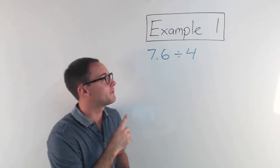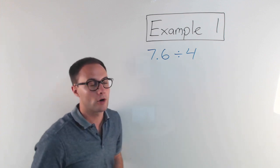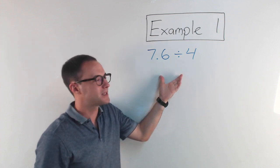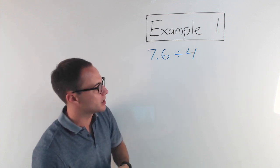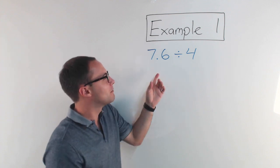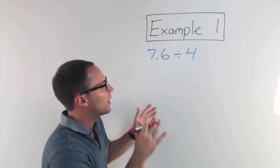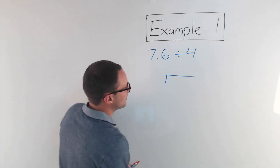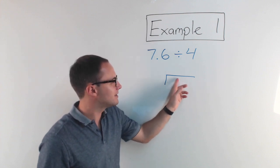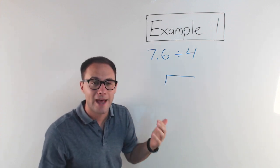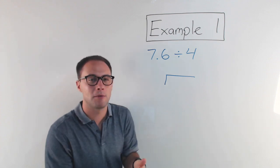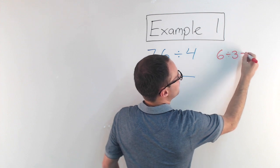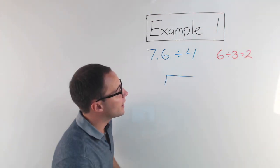Let's get right into it with our first example: 7.6 divided by 4. Your first step is going to be to rewrite it in long division form to help you find the quotient. A lot of people have a hard time remembering which goes where — what goes on the inside and what goes on the outside. If that happens to you, just think of a problem that you know by heart. For example, I know 6 divided by 3 is 2.